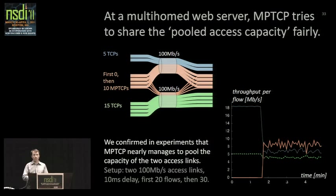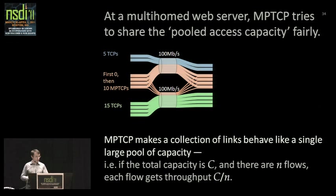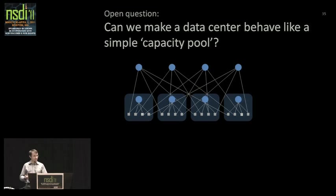MPTCP is trying to make a collection of links behave as though it was a single large pool of capacity — making this pair of access links behave like 200 megabits per second, divided fairly between all n flows. Which raises an interesting question: can we make a data center behave like a single pooled capacity? Do we have to think about individual paths and worry about bisection bandwidth? Wouldn't it be nice to just assign a single number — this is an 8-terabit-per-second data center — and let MPTCP handle all routing and path selection?